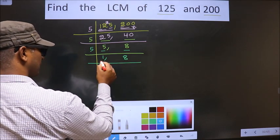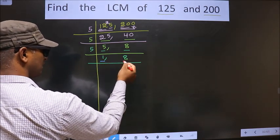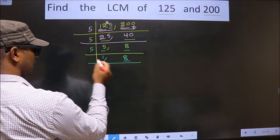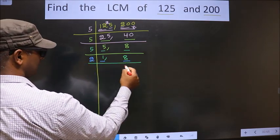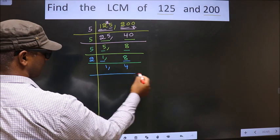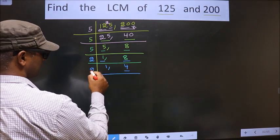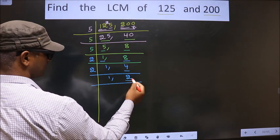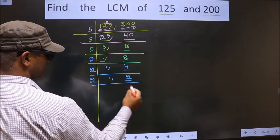Now here we have 4. 4 is nothing but 2, 2 is 4. Now we have 2, 2 is a prime number, so we take 2, 1 is 2.